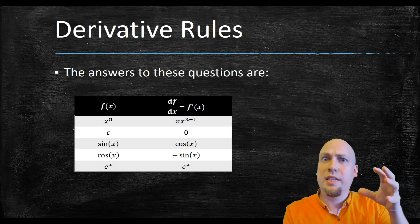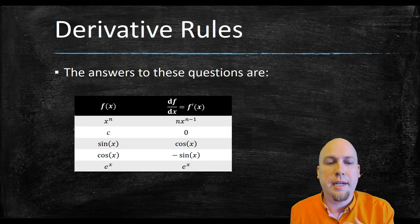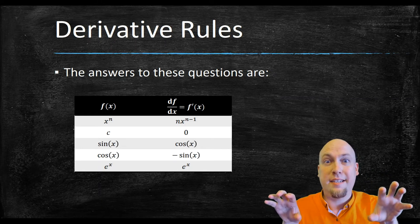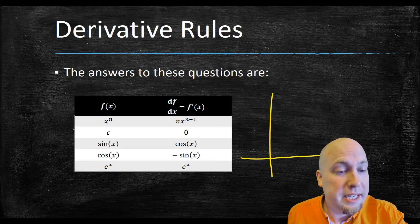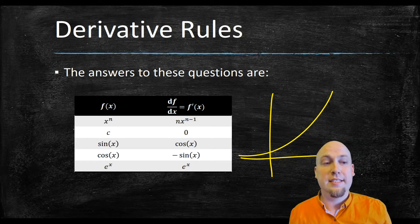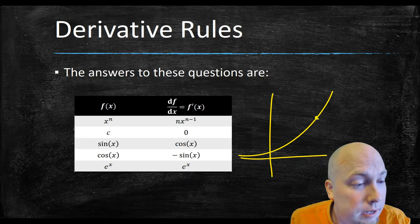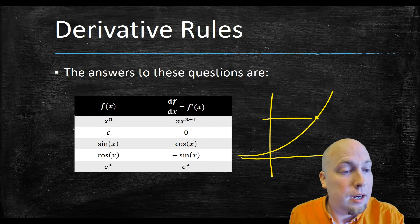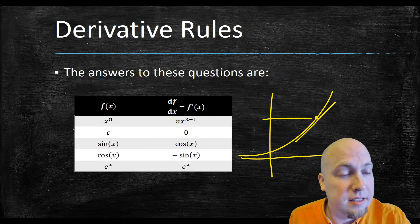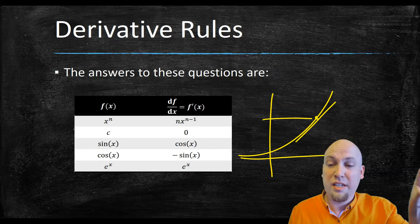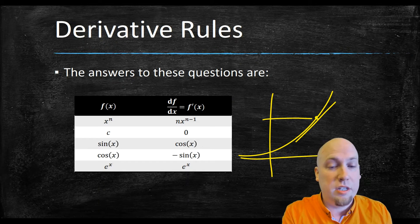The derivative of e to the power x is very, very special — this is probably the main reason why the number e is so special. The derivative of e to the power x is just e to the power x; that function is its own derivative. In terms of the graph, this means that at any point on the graph, the y-value there is exactly the same as the slope there, no matter what point you pick. The function e to the x is remarkably special: once you start taking derivatives, it is its own derivative.